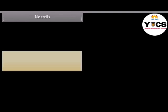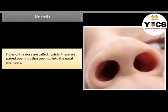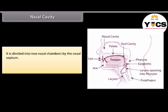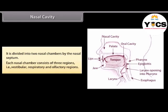The holes of the nose are called nostrils. These are paired openings that open up into the nasal chambers. The nasal cavity is divided into two nasal chambers by the nasal septum. Each nasal chamber consists of three regions: vestibular, respiratory, and olfactory regions.